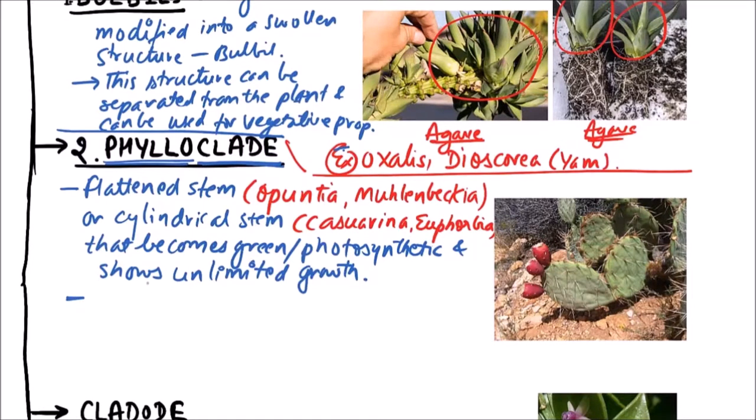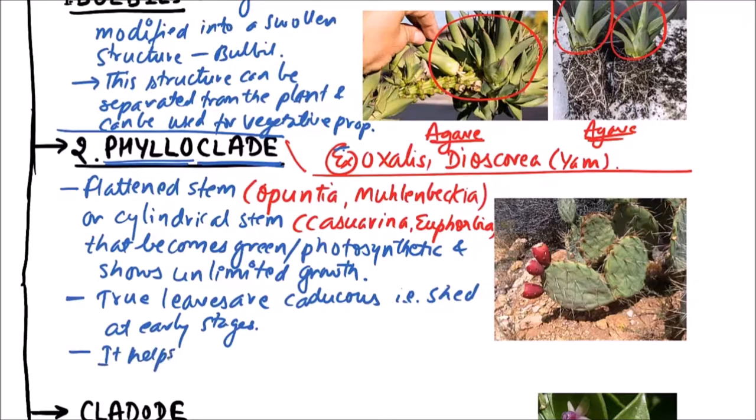So it also possesses leaves but the true leaves are caducous. Caducous means these are shed at early stages. So it helps the plant to grow in dry conditions.